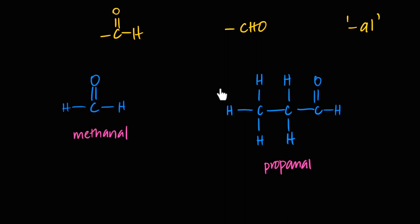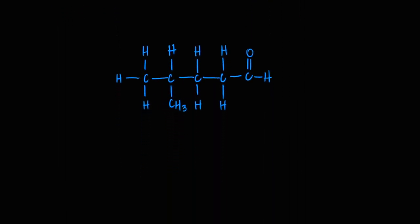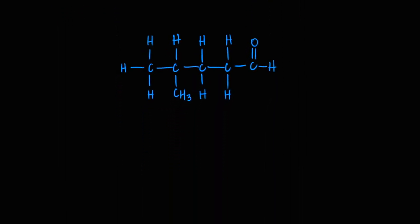The most basic aldehyde has one carbon — CHO — called methanal: 'meth,' no double bond so '-an,' and the aldehyde makes it '-al.' A three-carbon aldehyde — one, two, three in the main chain — is propanal: 'prop,' '-an,' '-al.'